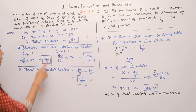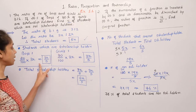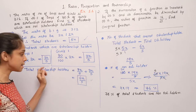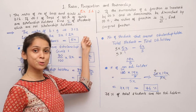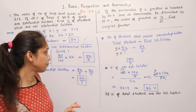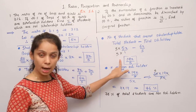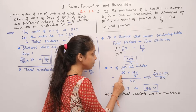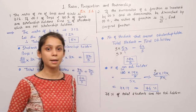This is how we solved it: first total students using the 3 to 2 ratio, then checked what percent are scholarship holders. Added both groups, subtracted scholarship holders from total students to get non-scholarship holders (19x upon 5). Then used the formula: 100 into non-scholarship holders divided by total students to get 76%.